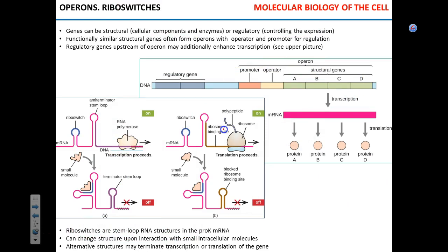Now we're going to talk about some stuff that regulates gene expression — riboswitches. 'Ribo' refers to RNA. Riboswitches are found in mRNA — a single-stranded molecule. We mentioned that RNA can form secondary structures: hairpin loops. A riboswitch is a secondary RNA structure — a hairpin loop — that can bind a small molecule regulator. That small molecule could be a metabolic product, a nutrient, a drug, or a short messenger molecule like a dipeptide.